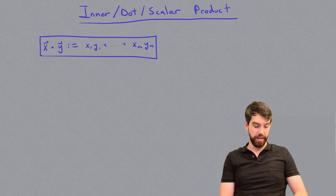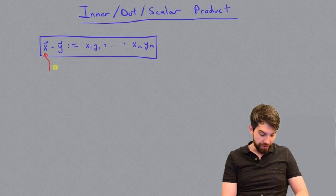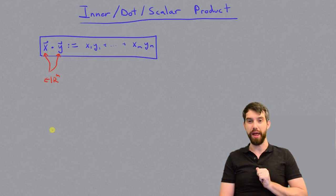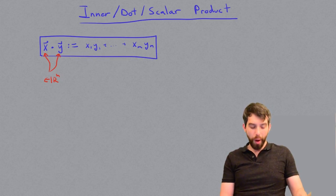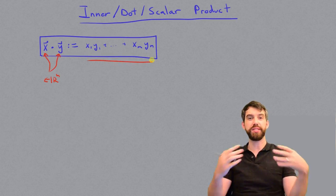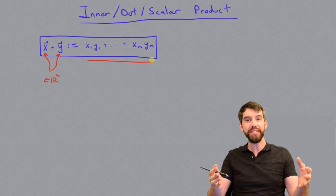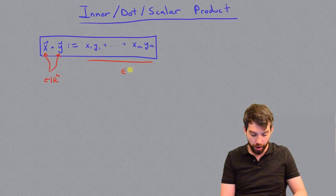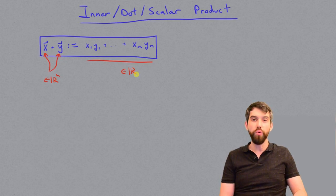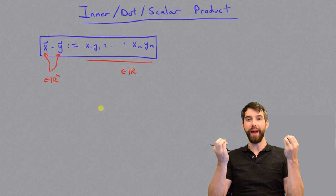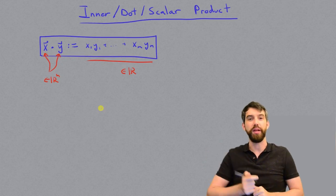Now I want you to note that x and y here are both living inside of Rn — these are vectors in Rn. But what I have on the right-hand side is just the sums and products of numbers. That is, this is just some number, or in other words, it is an element not of Rn but only of R. So the dot product takes two things that are going to be in Rn and spits out something in R.